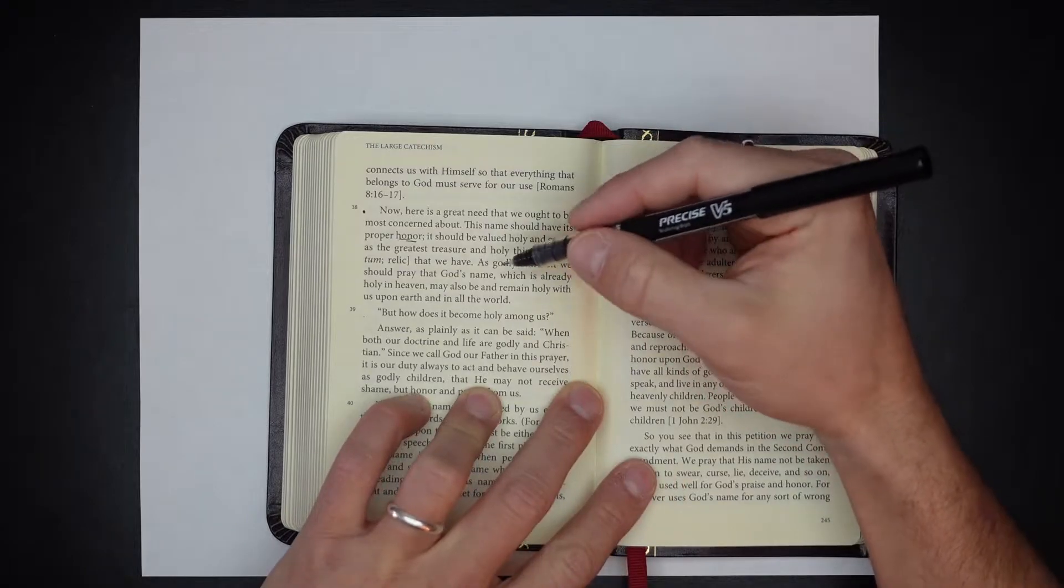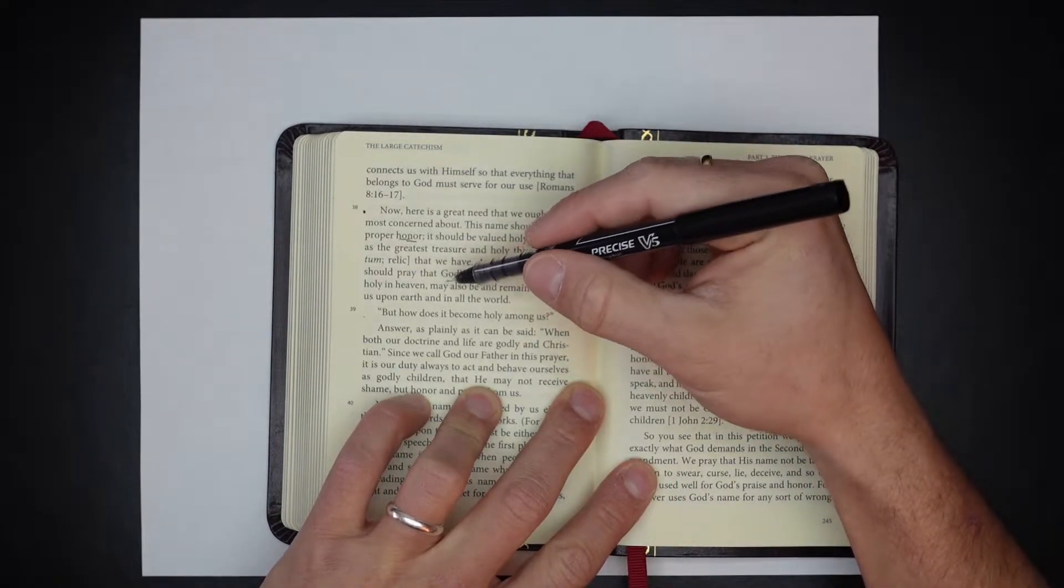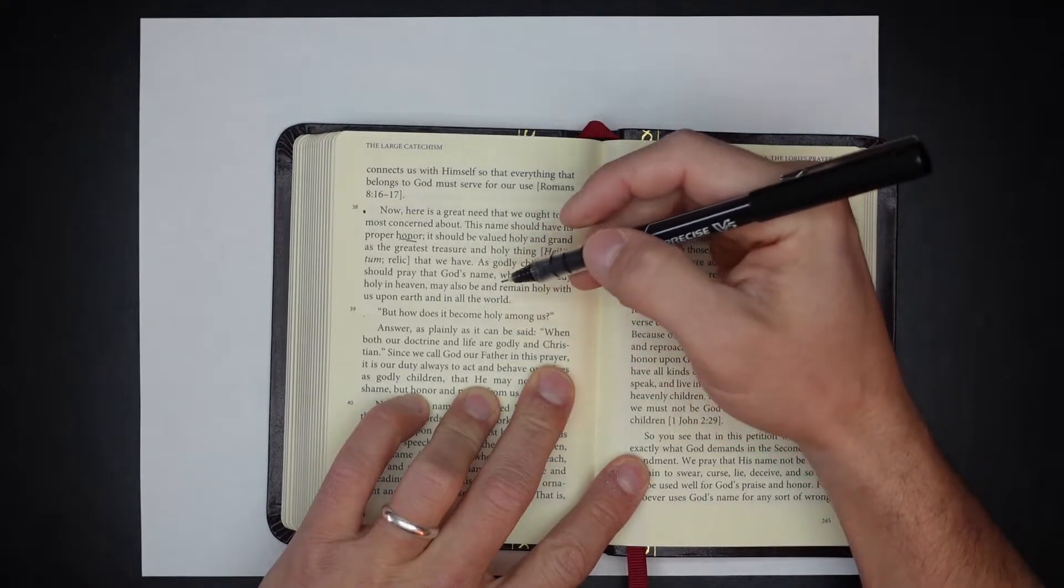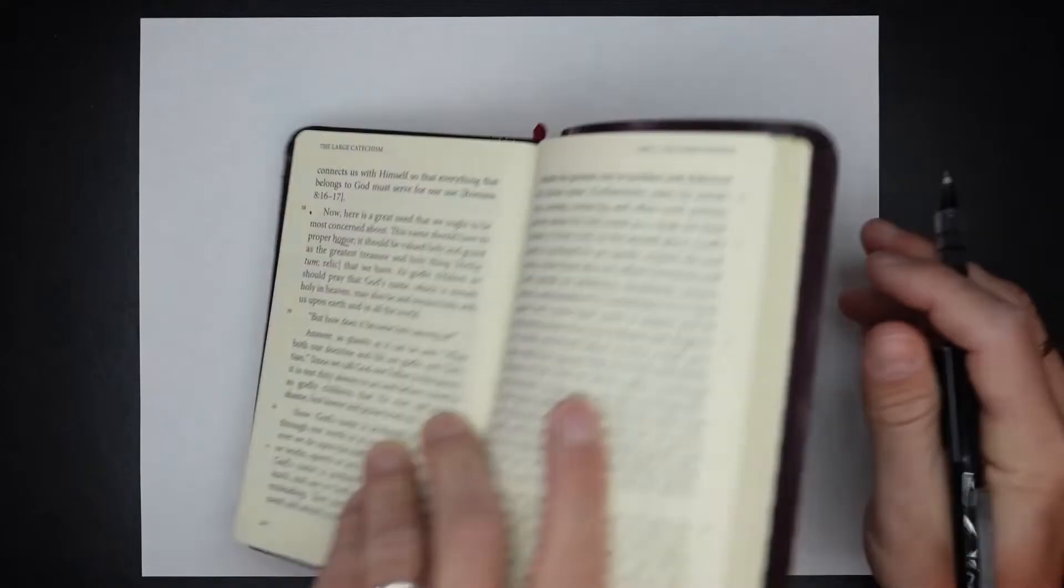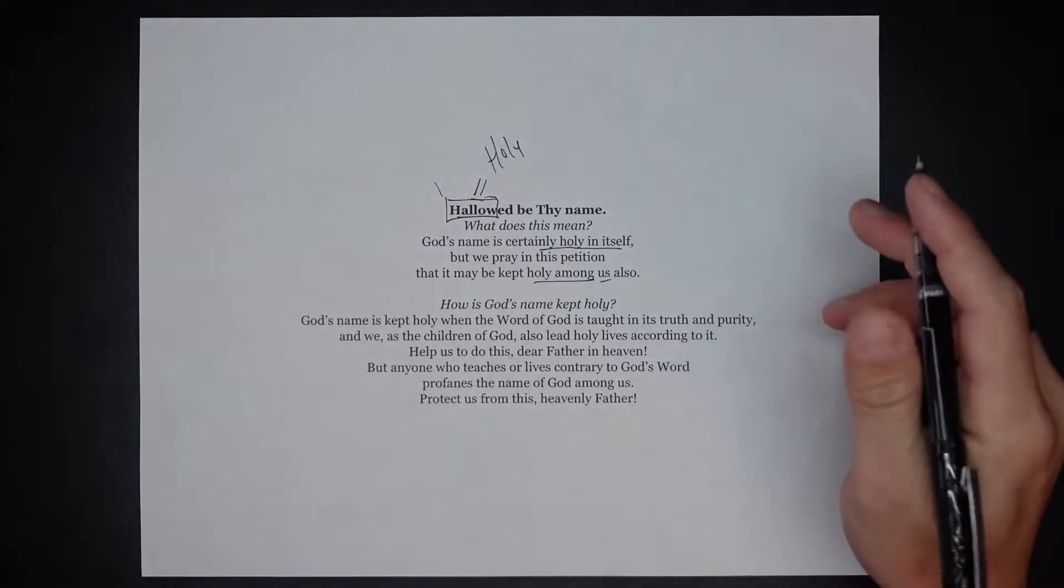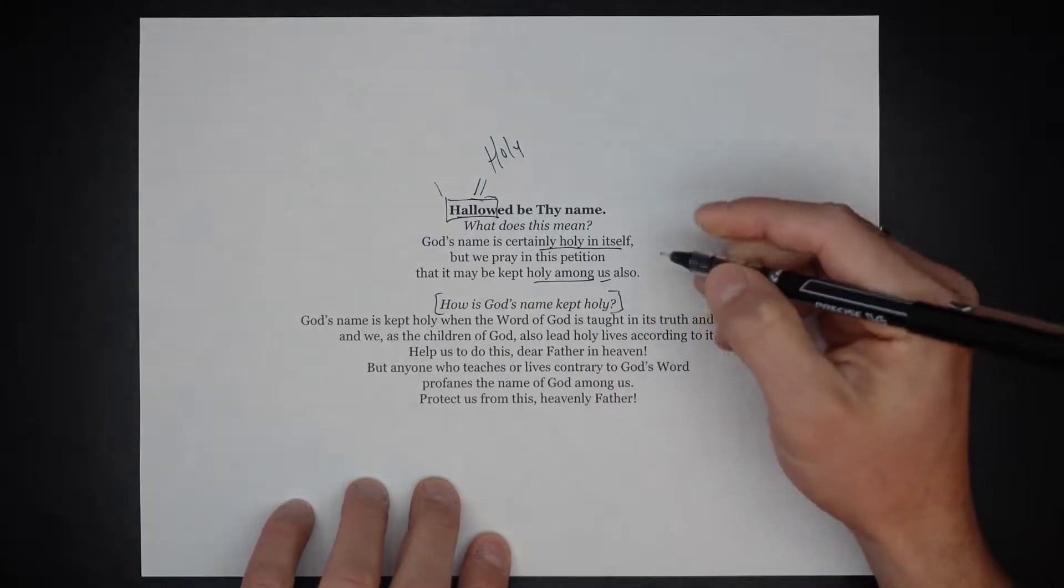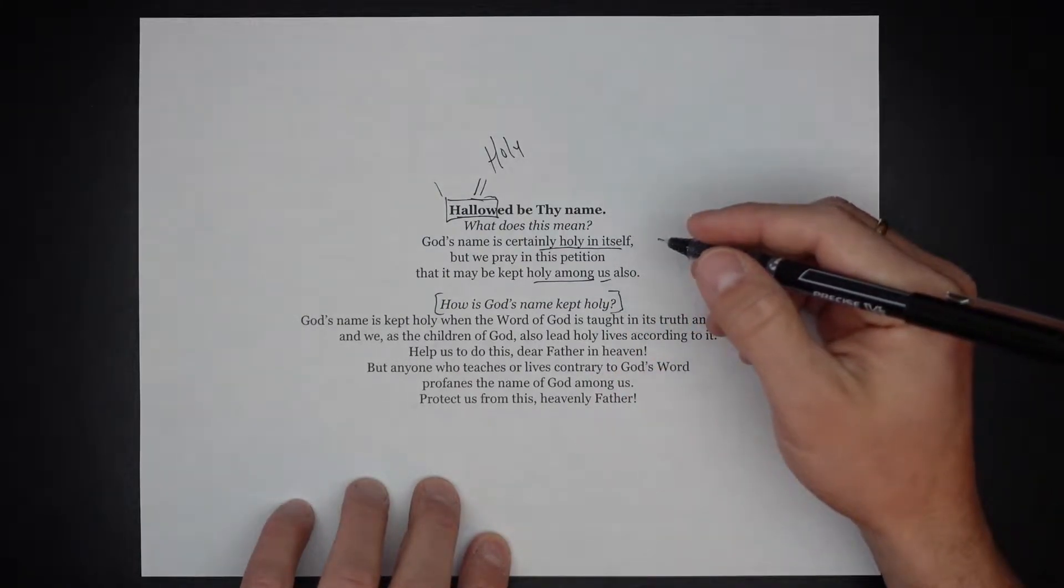As godly children, we should pray that God's name, which is already holy in heaven, may be and remain holy with us upon the earth and in all the world. Now, then Luther asks a good question. He asks it in the large catechism. We see it also here.